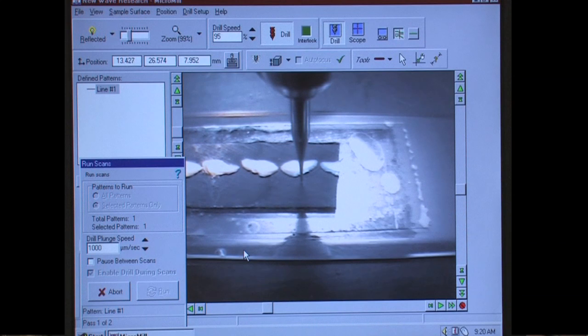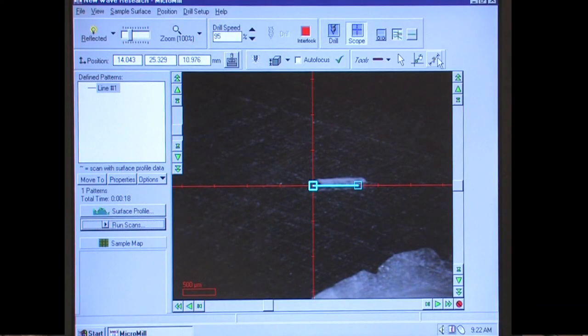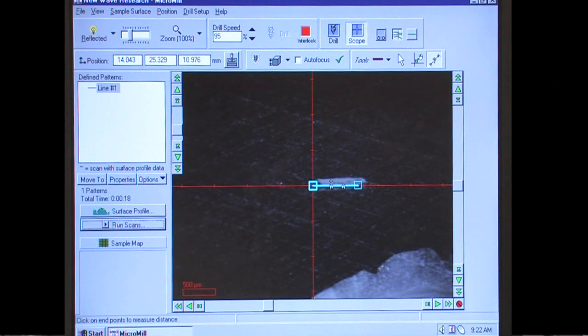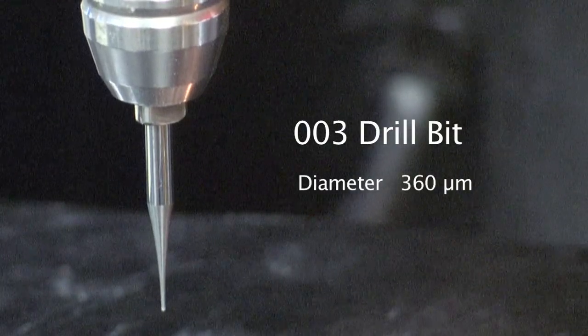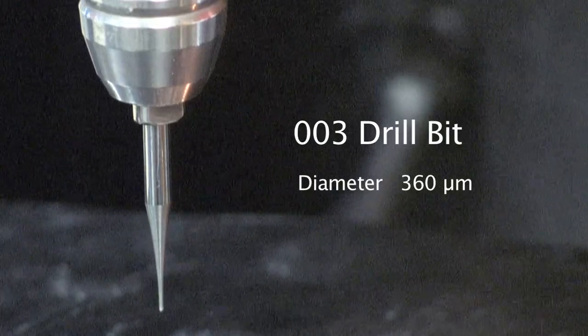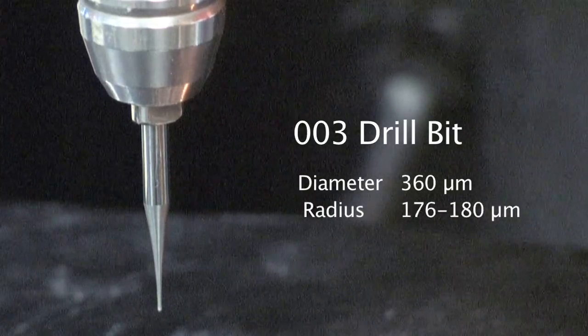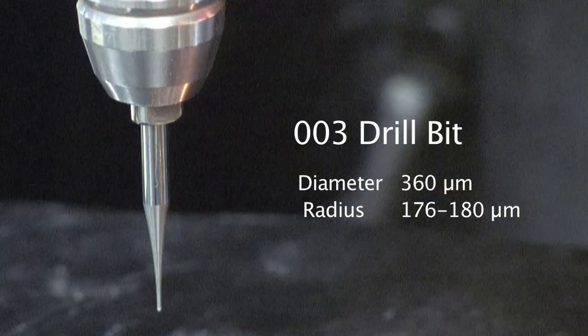Using the line tool, drill a short line in the resin away from your sample, and then use the measuring tool to determine the width of the drill bit. The 003 burr drill bit has a width or diameter of about 360 microns and a radius of 176 to 180 microns. Other bits will have different thicknesses.